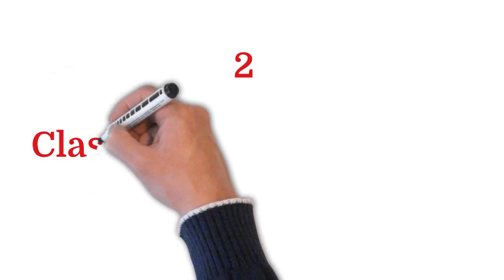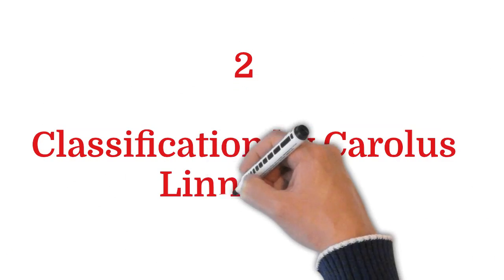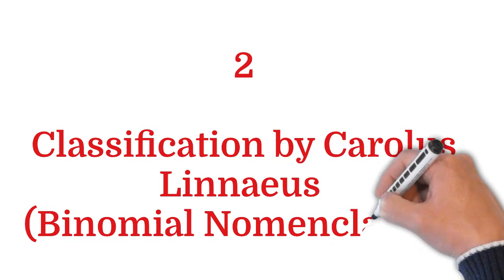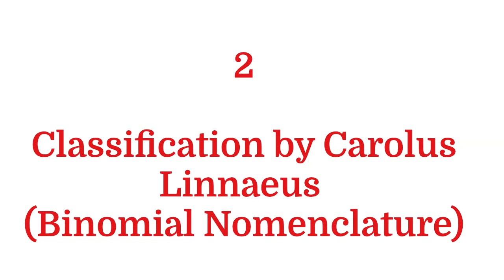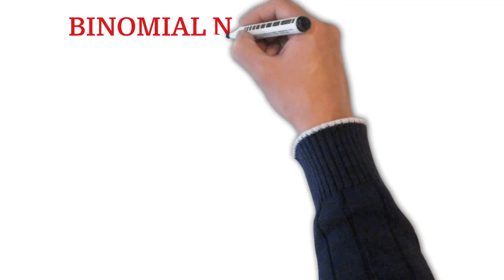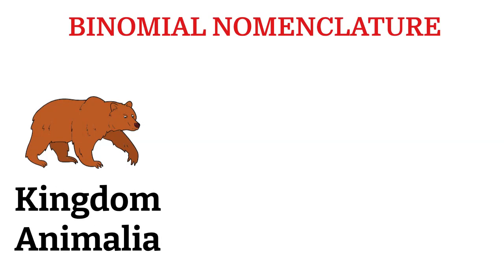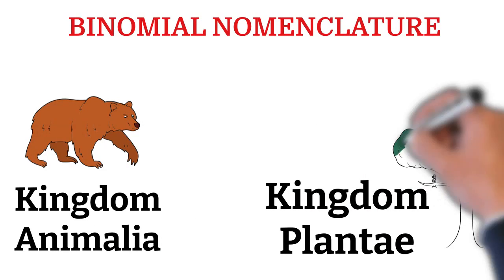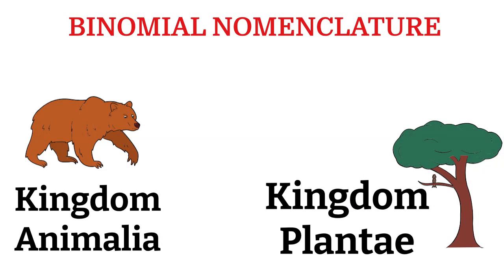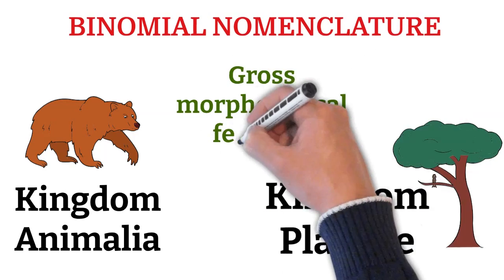Now, classification by Carlos Linnaeus. Later on, Carlos Linnaeus developed the two kingdom classification system known as Binomial Nomenclature, in which all the living organisms are grouped under two kingdoms: first, Kingdom Animalia, and second, Kingdom Plantae. The basis for this classification was gross morphological features.